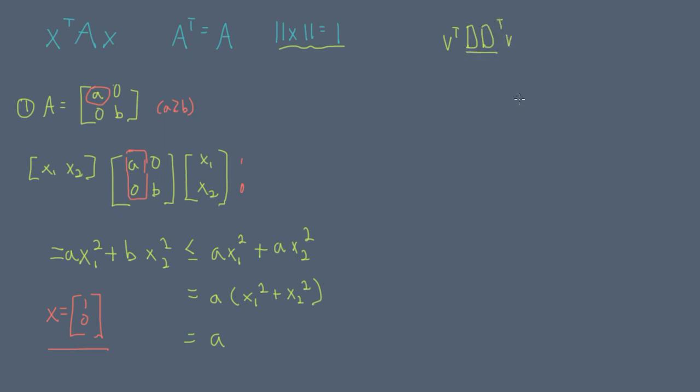dd transpose is also known as the covariance matrix, and in general for a dataset, features will have covariance. Thus, we must look at the more general case of optimizing the quadratic form when a is not diagonal.